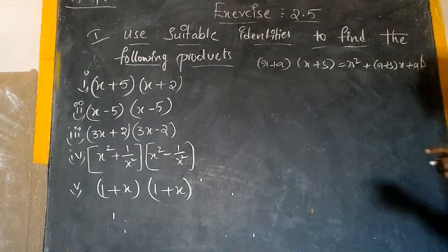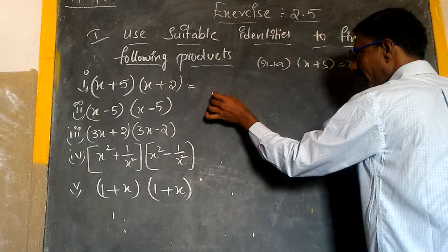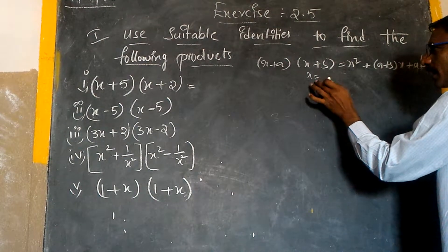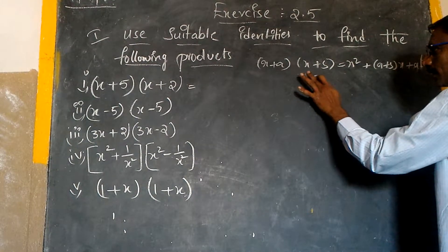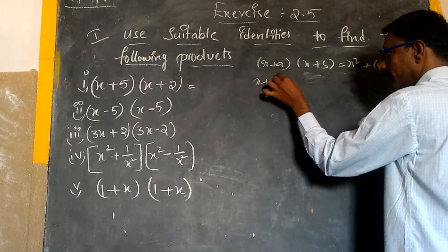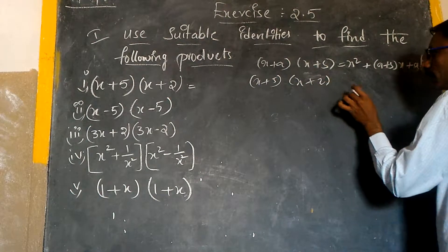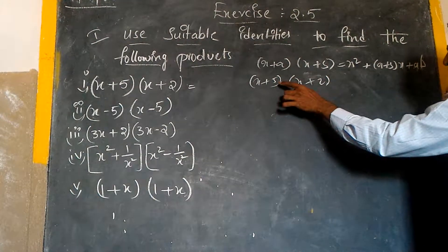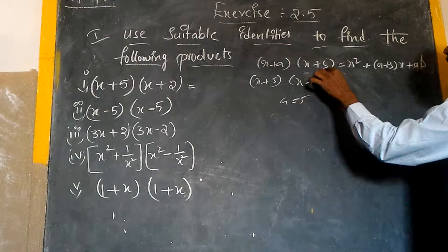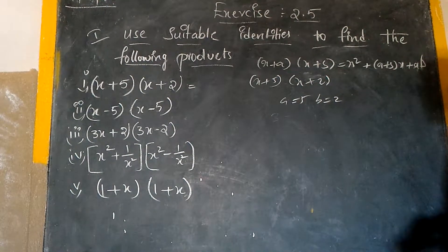What is my a here? 5. Here, what is my a? x. We can write it as x plus 5 into x plus 2. Yes, very simple. What is my a? 5. A is equal to 5. What is my b? 2. Is it right? Yes.